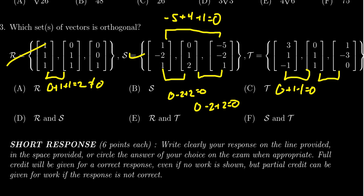The next one, you're going to get zero minus three plus zero. That's equal to negative three, which is not zero. So T is not an orthogonal set. So the correct answer for this one would be B. S is the only orthogonal set provided.